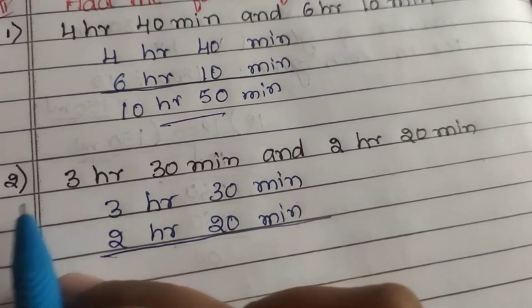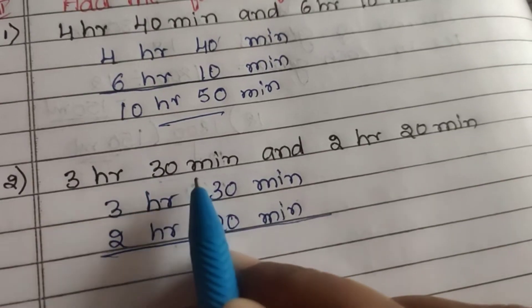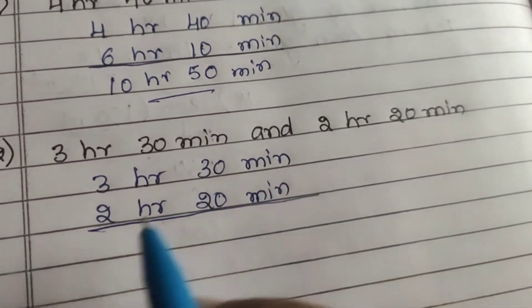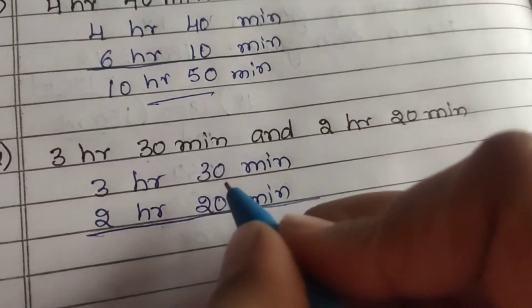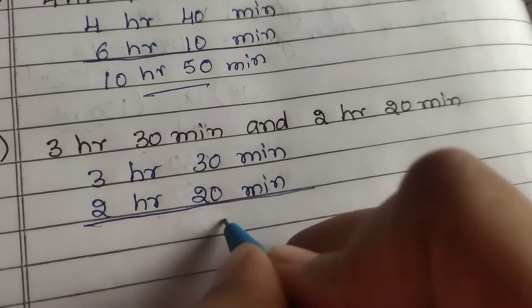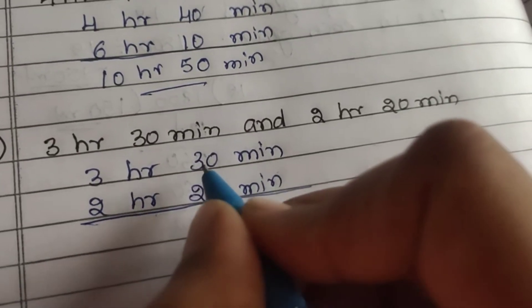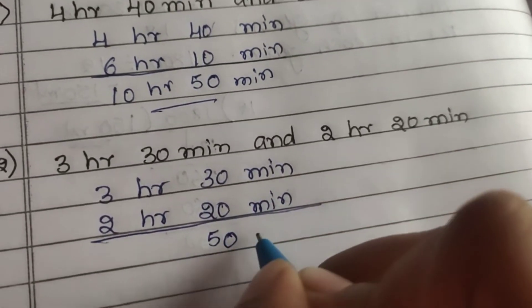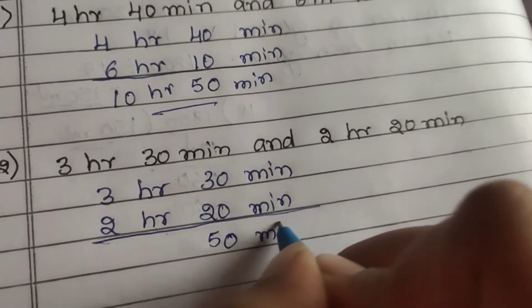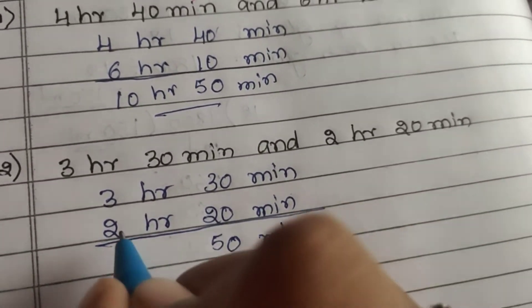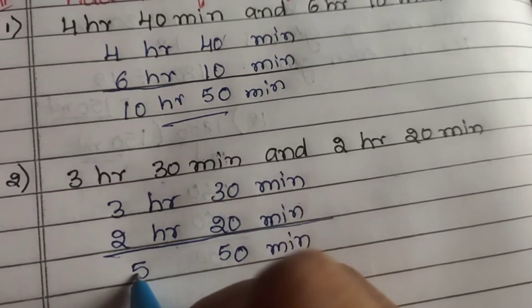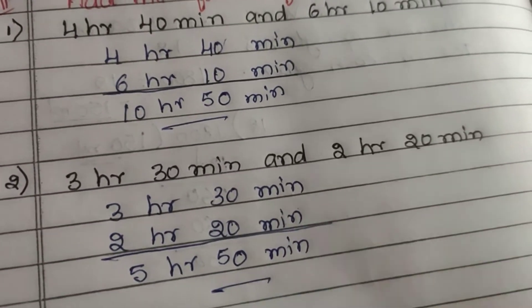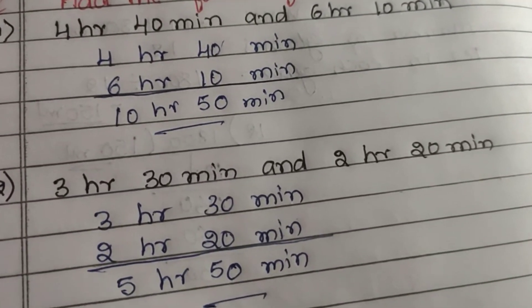Second one: 3 hours 30 minutes and 2 hours 20 minutes. 0 plus 0 is 0, 3 plus 2 is 5 — 50 minutes. 3 plus 2 is 5, so the answer is 5 hours 50 minutes.